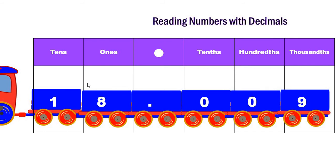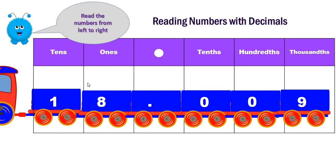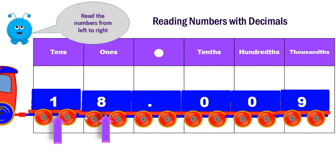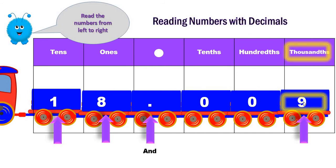Let's read from left to right. It's eighteen and — we read this word — nine thousandths.